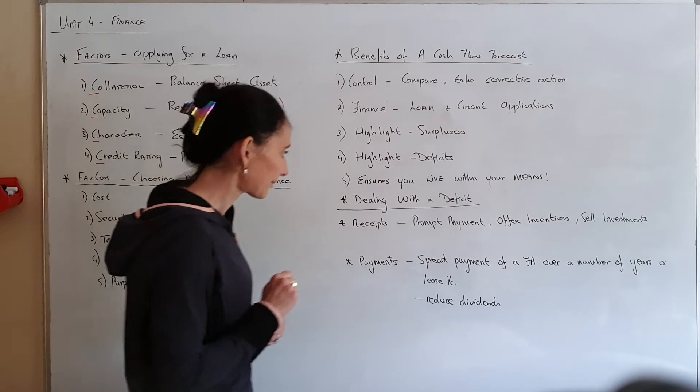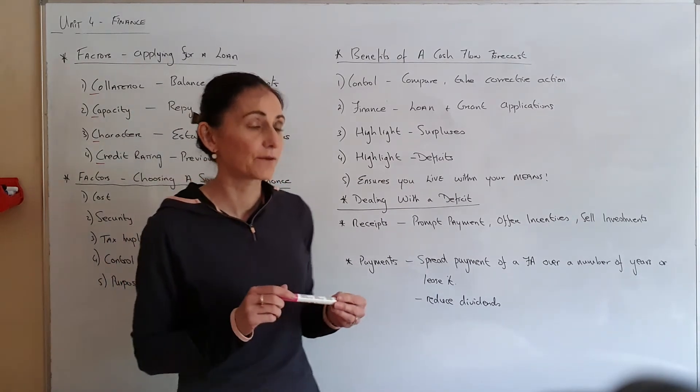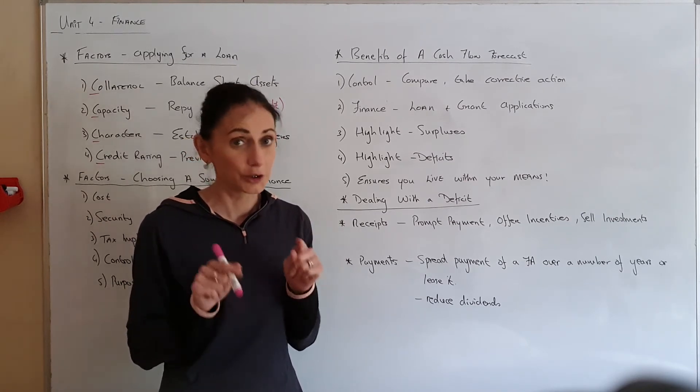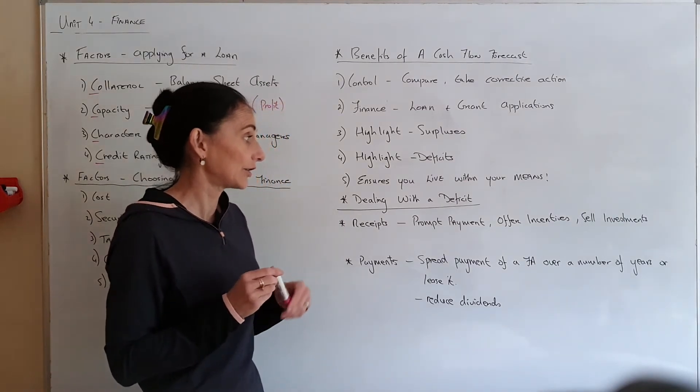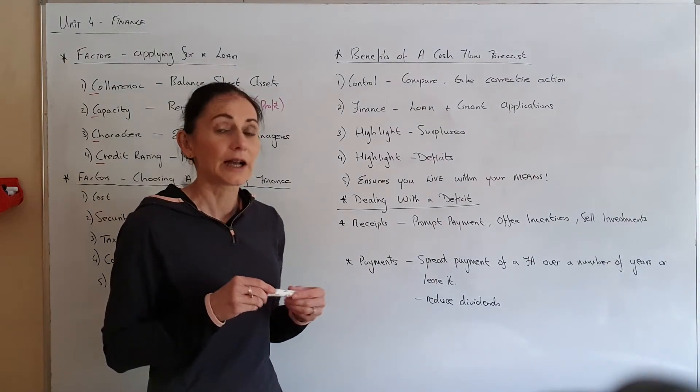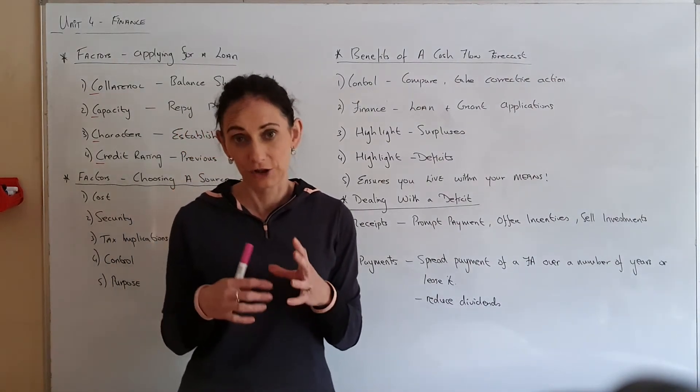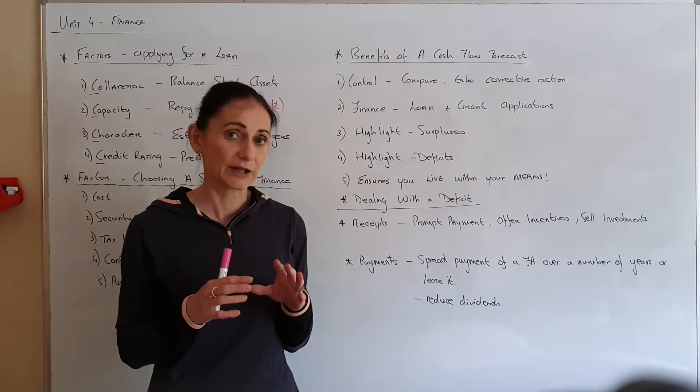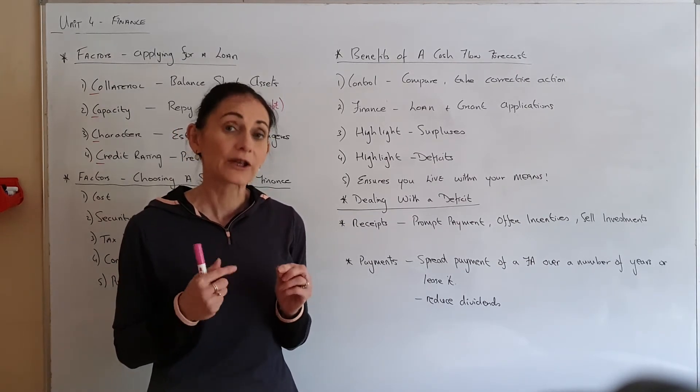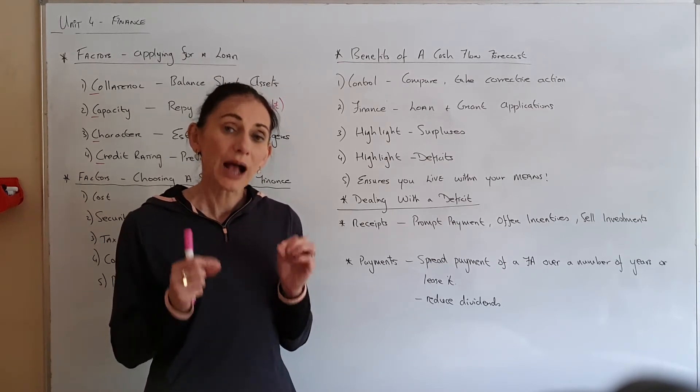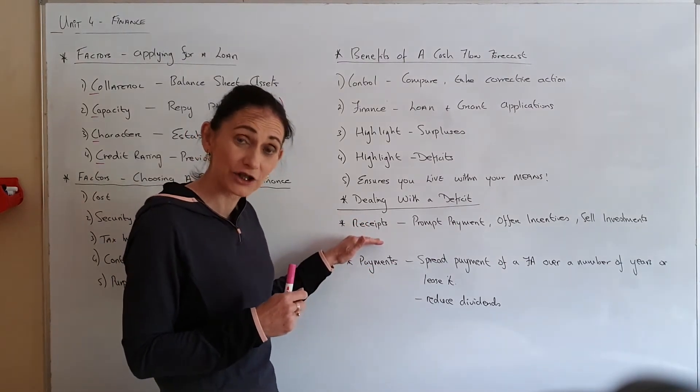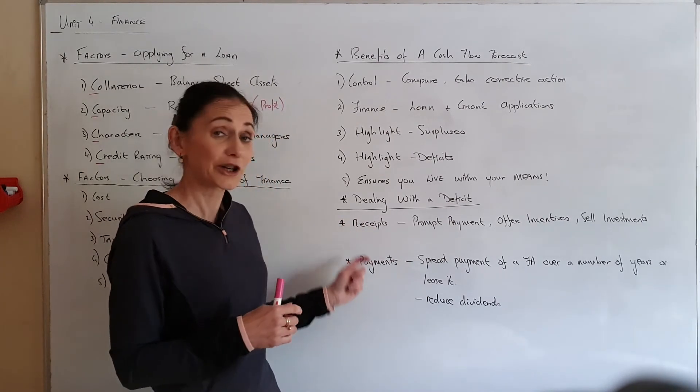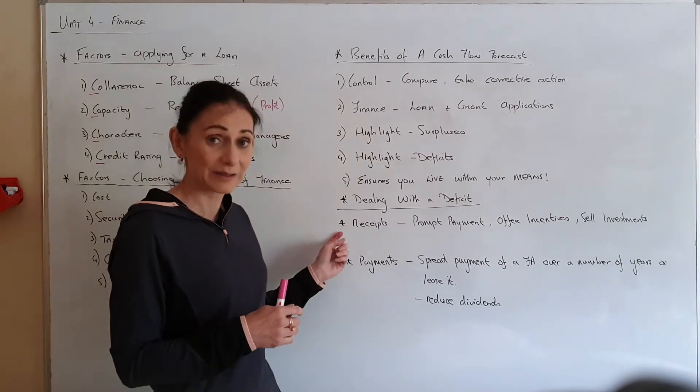They love asking if they give you a cash flow forecast to analyze or to complete some of it—which was due up in 2020—they might ask you to make recommendations on how to deal with a deficit. If you look at your cash flow forecast, it's made up of receipts and payments. If the question asks you how to deal with a deficit, you have to mention a receipt and you have to mention a payment. You might need three points, so it doesn't matter where the third point comes from, but you must mention a receipt and a payment.